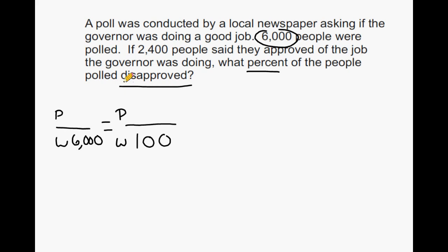Now remember, we said we are looking for the amount of people who disapproved. This 2,400 right here does not represent the amount of people who disapproved. That actually represents the amount of people who approved of the job. So what we have to do for this numerator here is write the number of people who actually disapproved of the job.